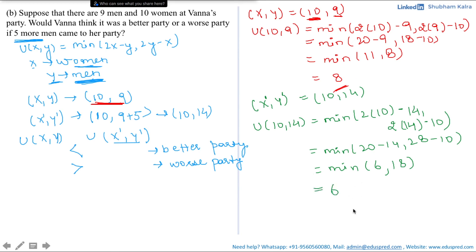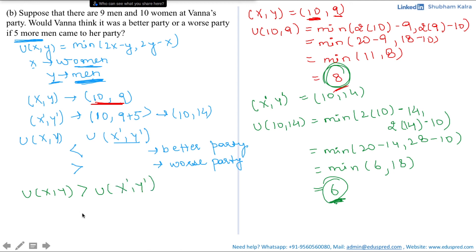Her utility has decreased: earlier it was 8 and now it is 6. The utility from bundle (x, y) is greater than the utility from bundle (x', y'). After inviting 5 more men, her utility and satisfaction levels have decreased, making it a worse party. Thus, if she invites 5 more men to her party, she is making her party worse.